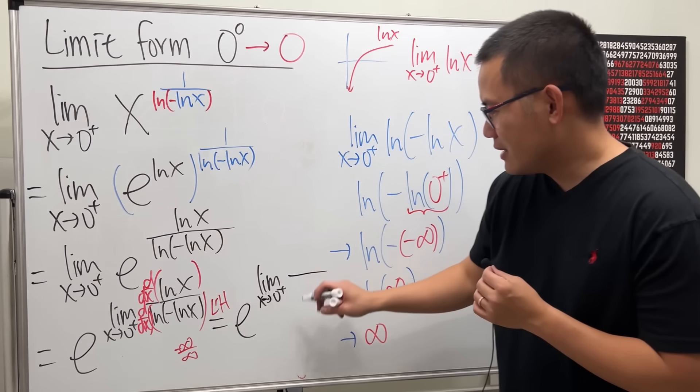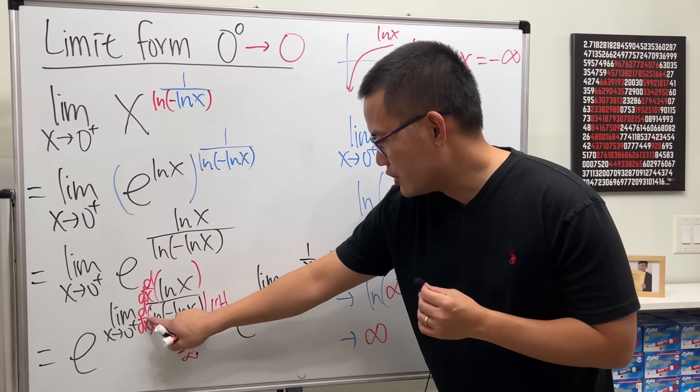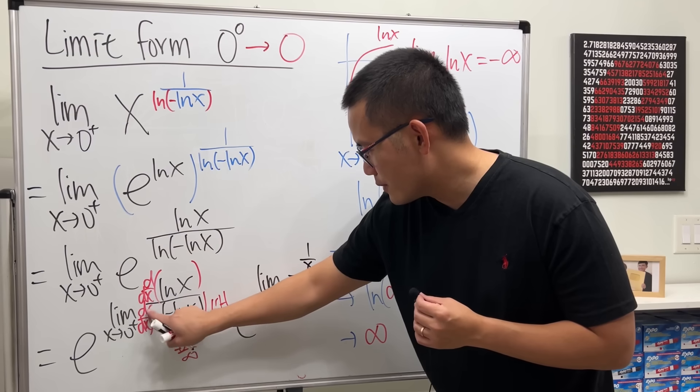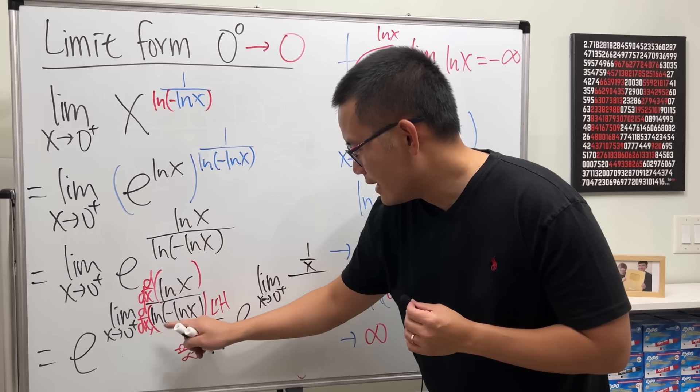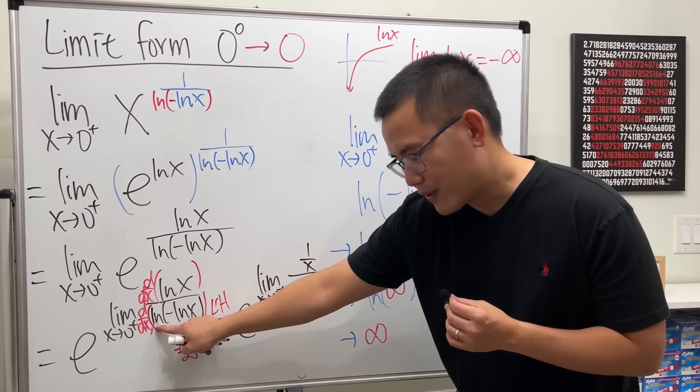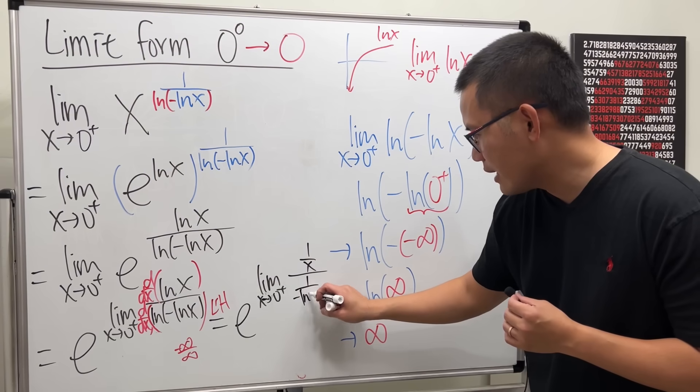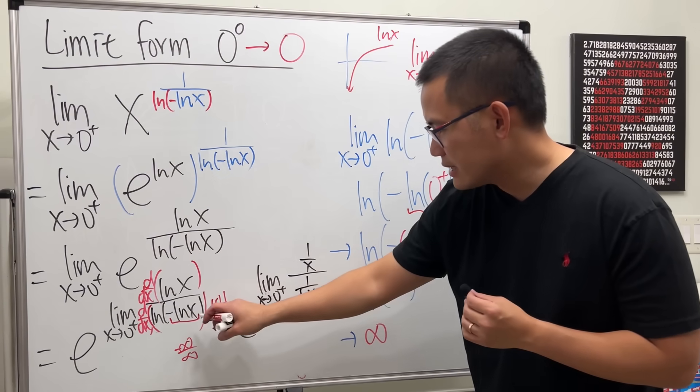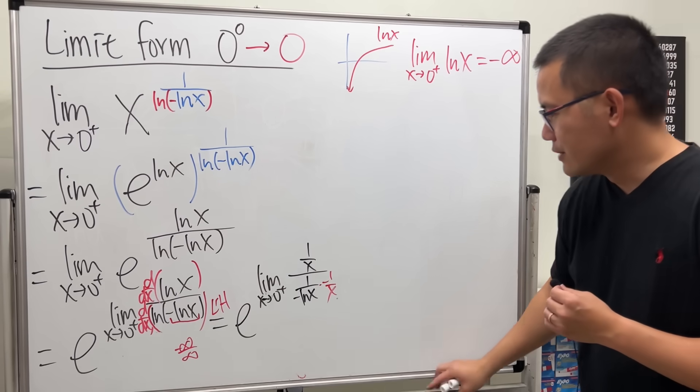This right here is 1 over x. Now check this out, if we differentiate the first ln we will have, okay, if we differentiate the first ln we put this on the bottom so we'll have 1 over negative lnx. And then we differentiate the inside. The derivative of negative lnx is negative 1 over x. So have a look.